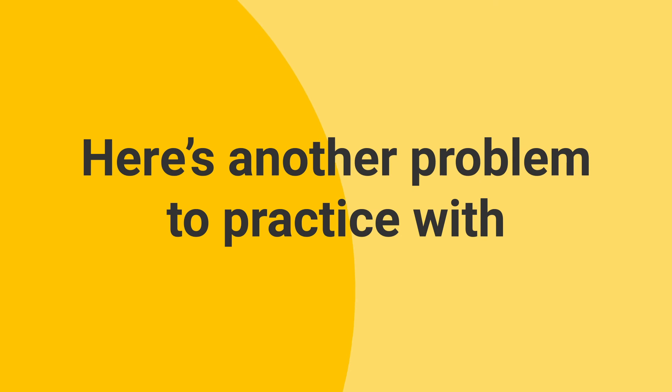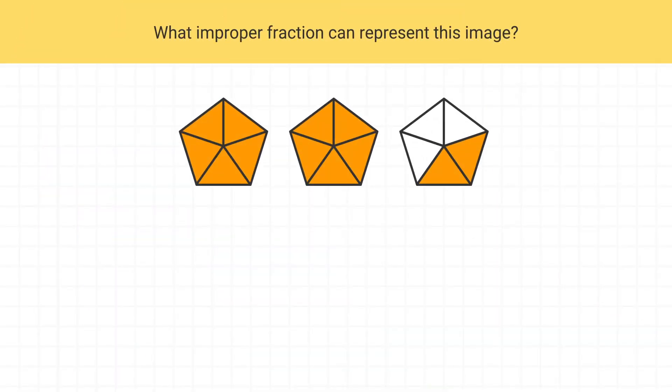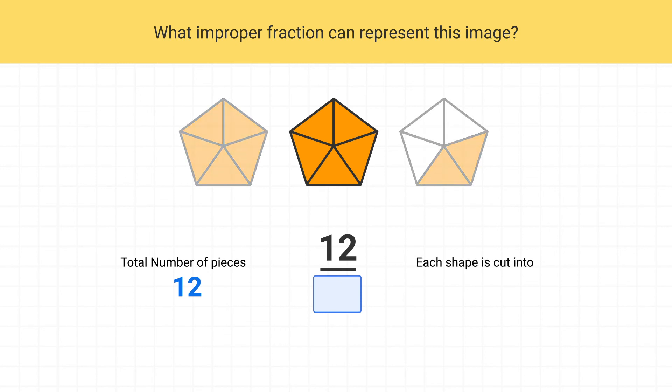Here's another problem to practice with. What improper fraction can I use to describe this image? To start, what should the numerator of the fraction be? The numerator is the number of shaded pieces we have. Here, there are 12 shaded pieces, so the numerator is 12. What should my denominator be? The denominator is the number of parts in one whole. We can see that each whole is made of 5 parts, so the denominator is 5. This image is the fraction 12 fifths.